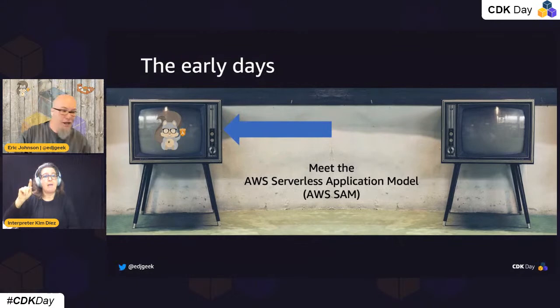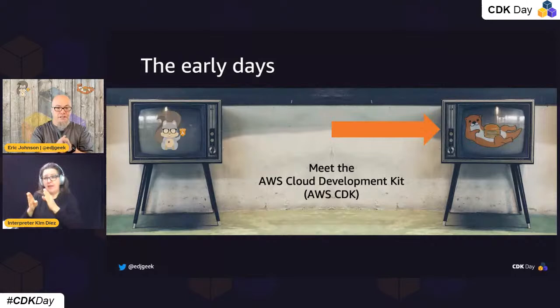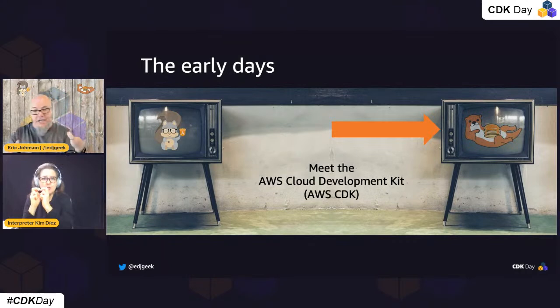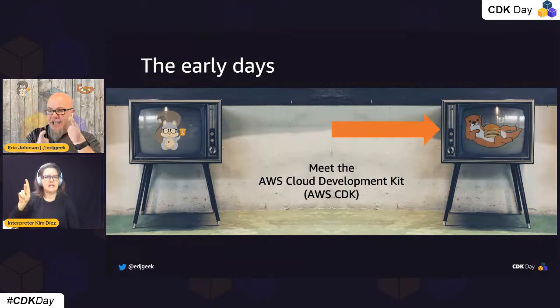So around came this little creature — SAM, the AWS Serverless Application Model. And the people were happy. But then we also came around a little bit later with Pancakes the otter and SAM the squirrel — the AWS Cloud Development Kit. And you've probably heard of the Cloud Development Kit if you're at this event.